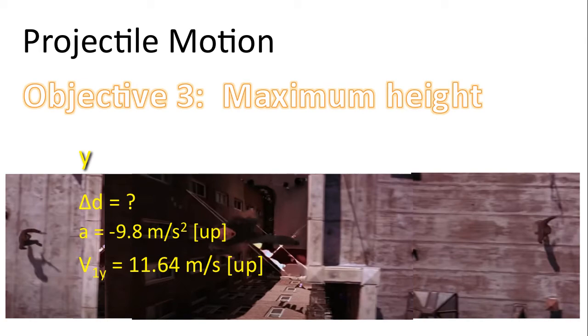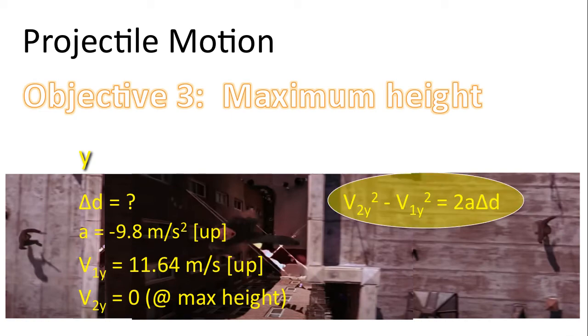And we know his initial velocity in the upwards direction. He's pushing off the ground and his launch velocity is 11.64 meters per second up. Now, at maximum height, anytime we have maximum height, his velocity in the y direction is zero. And that's for any object that achieves a maximum height. Final velocity is zero. Here's an equation I'd like you to use to solve for maximum height or the displacement. Pause the video now.